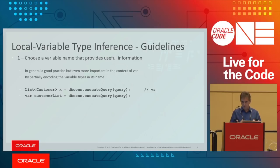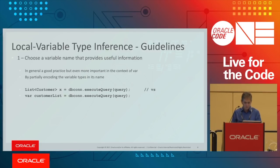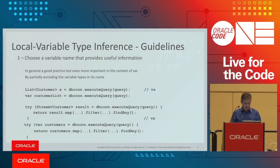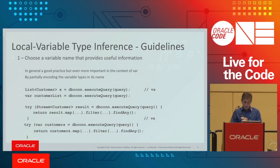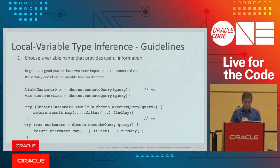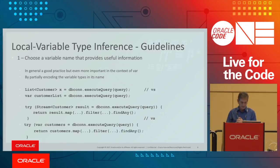The name customerList really describes what it is, especially in a large method where you might have x, y, z — at some point you lose the meaning. A meaningful variable name really helps. Similarly, in a try-catch statement, using result as a variable name is better than x, but customers is much better because at least you know it's a stream of customers. That's also a good place to use var.